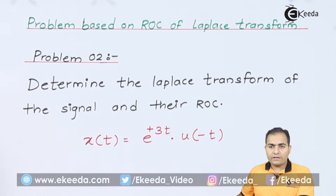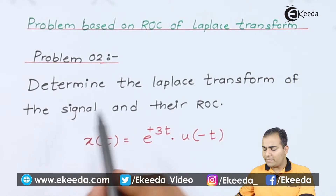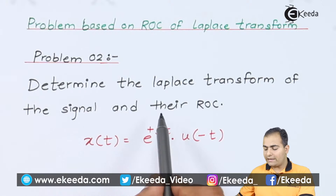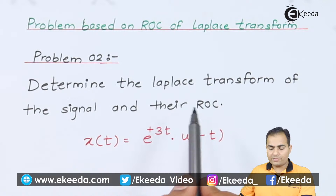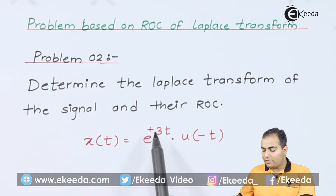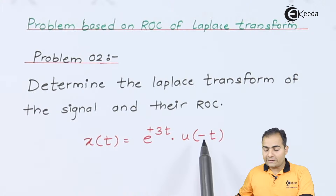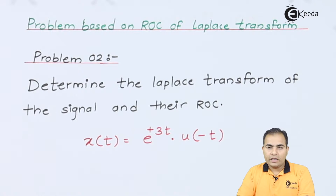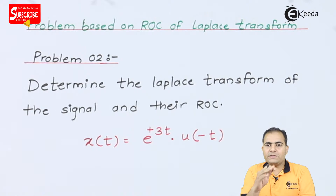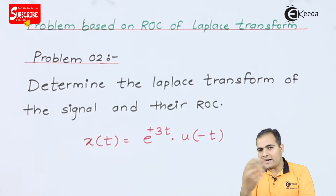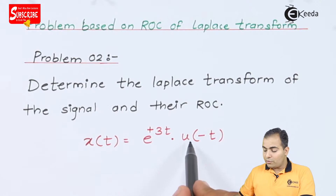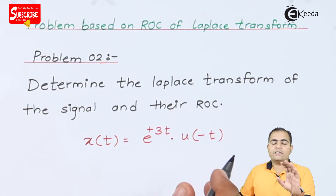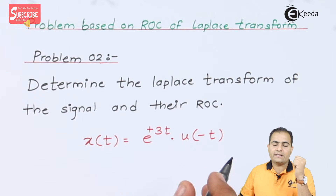Look at the question. The question is: determine the Laplace transform of the given signal and find their ROC, where x(t) = e^(+3t) · u(-t). Now, u(-t) means the mirror image of u(t) is taken. Whenever u(t) is there, the function is a right-handed signal, but whenever u(-t) is there, the function is a left-handed signal.